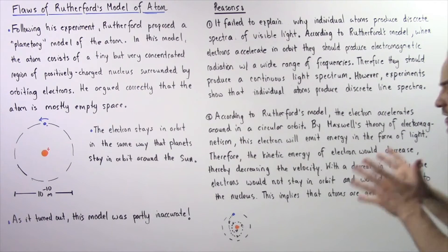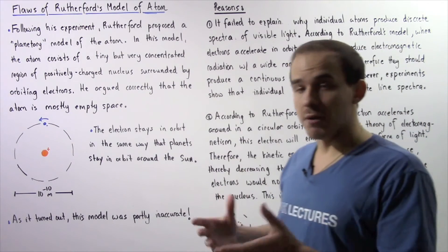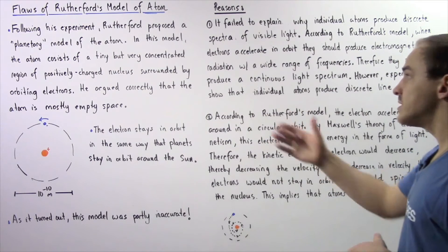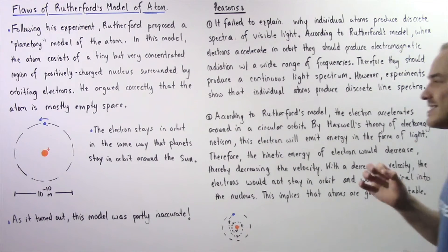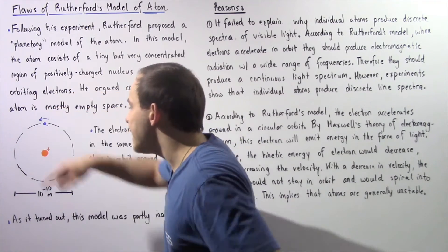Now let's move on to reason number two or flaw number two. So according to the planetary model of the atom, the electron accelerates around the following orbit,